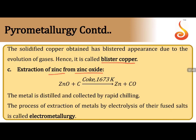Extraction of zinc from zinc oxide is done by the Belgian process: zinc oxide is reduced to zinc in presence of coke, requiring a temperature exceeding 1400 K (minimum 1673 K). Below that temperature, the reaction does not take place. The metal is distilled and collected by rapid chilling.